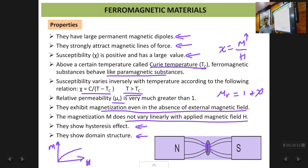Out of all three types, ferromagnetic materials show the strongest magnetization. They are used for making permanent magnets and also for making cores in transformers and motors, and have found very large applications in our day-to-day life. Thank you.